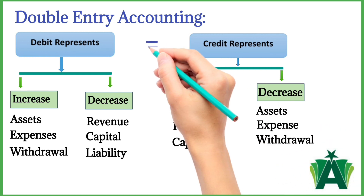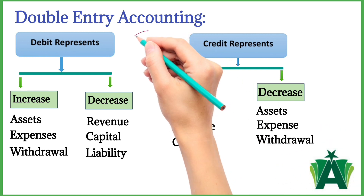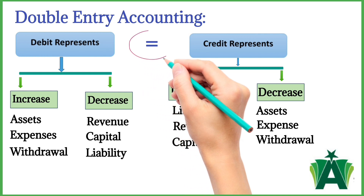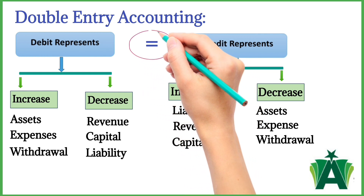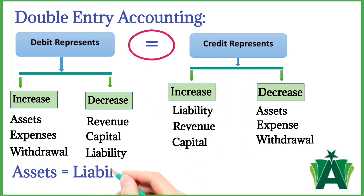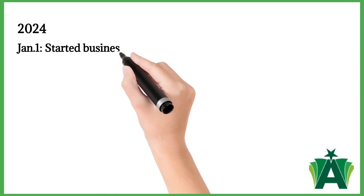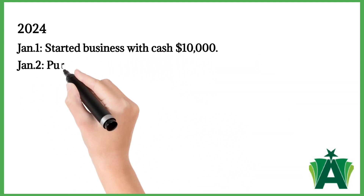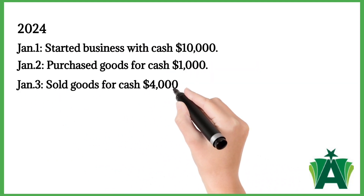It's important to remember that every transaction has two parts, and the total debits must always equal the total credits. This ensures the accounting equation: assets equals liabilities plus owner's equity.